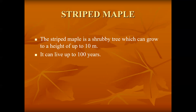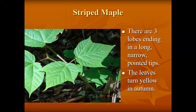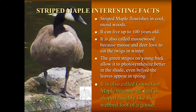Striped maple is a shrubby tree that grows mostly in central and northern Ontario. It has three lobes, all with teeth. The unique characteristic that gives it its name is that in young trees it has distinctive bark stripes. The striped maple also looks very much like a Canadian goose foot, and for this reason it is also called the goose foot maple.